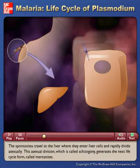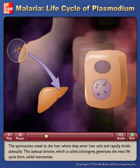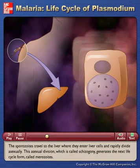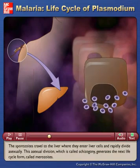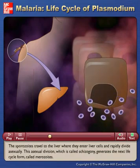The sporozoites travel to the liver where they enter liver cells and rapidly divide asexually. This asexual division, which is called schizogony, generates the next life-cycle form, called merozoites.